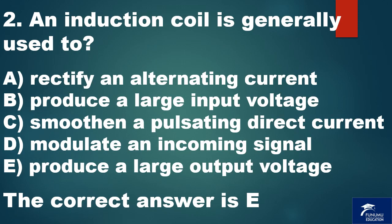Question 2. An induction coil is generally used to? A. Rectify an alternating current. B. Produce a large input voltage. C. Smoothen a pulsating direct current. D. Modulate an incoming signal. E. Produce a large output voltage. The correct answer is E.